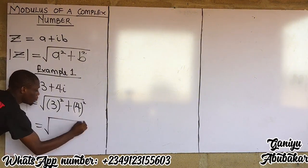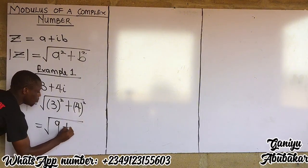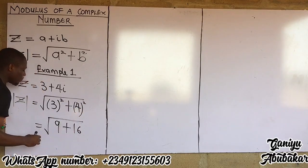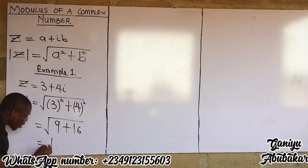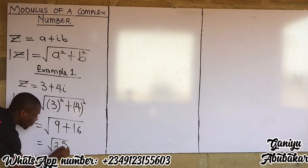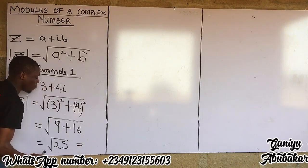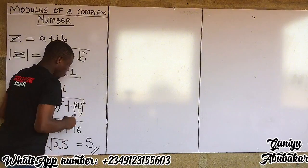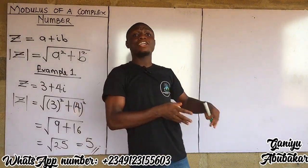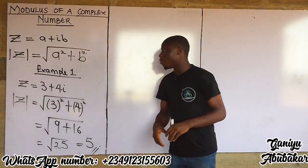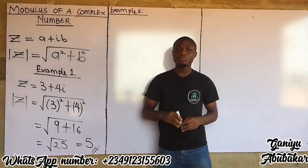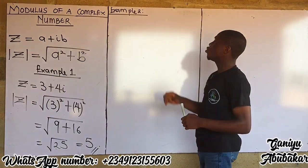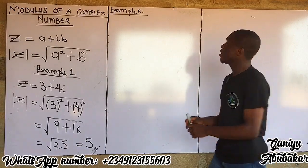The modulus becomes the square root of three squared giving nine, plus four squared giving sixteen. Summing them up, the modulus becomes the square root of 25, which gives five as the modulus — the magnitude of the complex number.